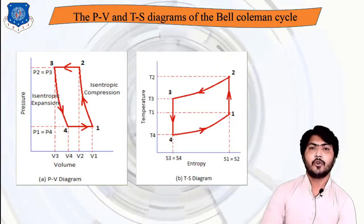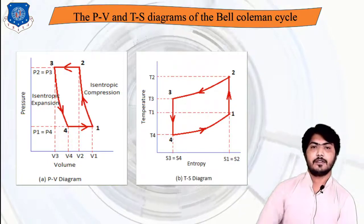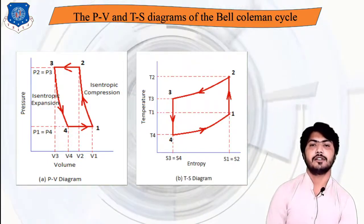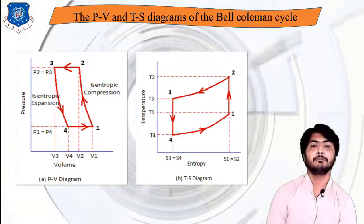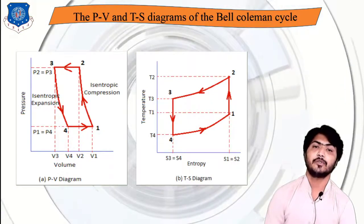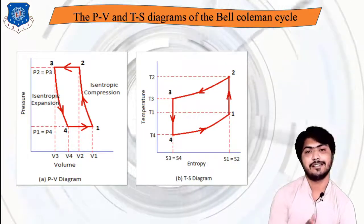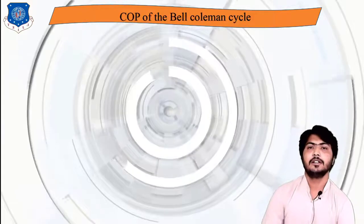Process 4 to 1 is again a constant pressure heat exchanger process where heat is absorbed from the surroundings, and temperature increases from state 4 to state 1.